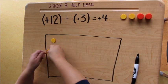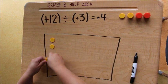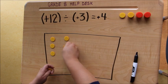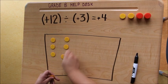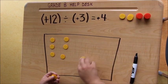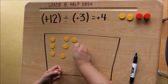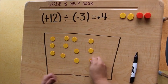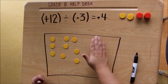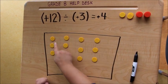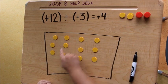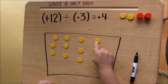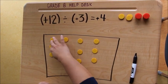So I'm going to do that. Here's 1 group of 3 positive tiles, 2 groups of 3, 3 groups of 3, and 4 groups of 3. And that gives me 1, 2, 3, 4, 5, 6, 7, 8, 9, 10, 11, 12 positive tiles.